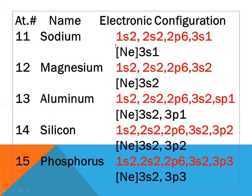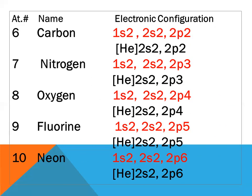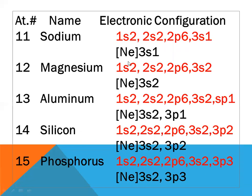Sodium, atomic number eleven: configuration 1s2 2s2 2p6 3s1. Ten electrons are accommodated in the inner shells, and the remaining one goes to 3s1. Since the configuration 1s2 2s2 2p6 is the same as neon, we place neon here. The valence configuration is [Ne] 3s1. Magnesium, atomic number twelve: configuration 1s2 2s2 2p6 3s2. We place neon instead of 1s2 2s2 2p6, and the valence configuration is [Ne] 3s2.